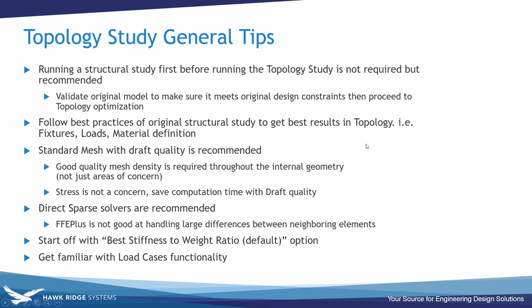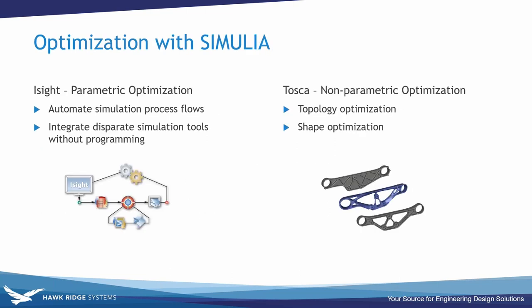Silvio told me that topology optimization is actually powered by Simulia technology. When I mentioned Abacus earlier, I talked about extended packaging where you also get FeSafe for fatigue, iSight, and Tosca — both optimization tools. iSight is our parametric optimization tool, similar to the design optimization in Simulation Professional but with additional capability. Tosca is our non-parametric optimization tool, and that is the tool the Simulation Professional topology optimization was taken from — you may actually see the Tosca name pop up on some options in SolidWorks Simulation.